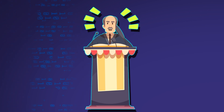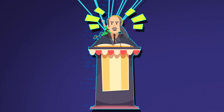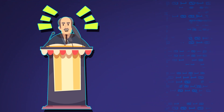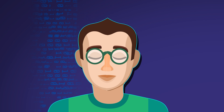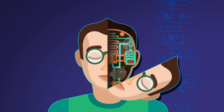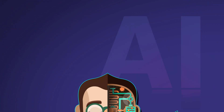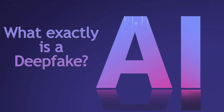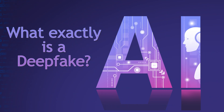Imagine seeing a video of a famous person saying something shocking, or watching yourself do something cool that you never actually did. It might look real, but here's the thing — it could be a deepfake created by AI. But what exactly is a deepfake and how does AI make it happen? Let's find out.